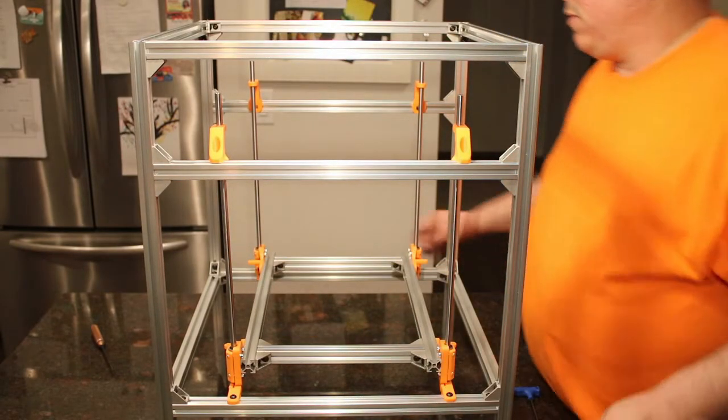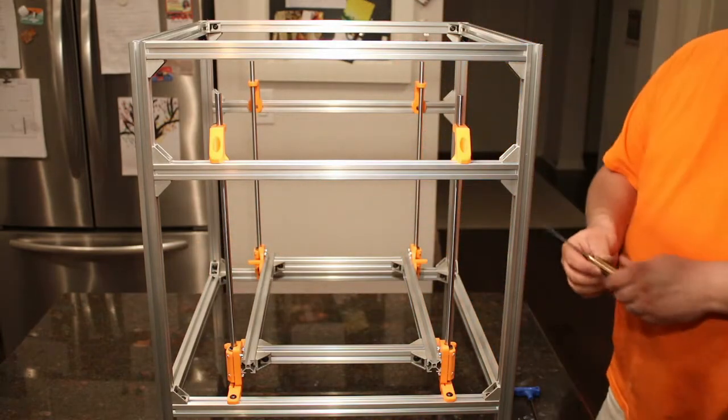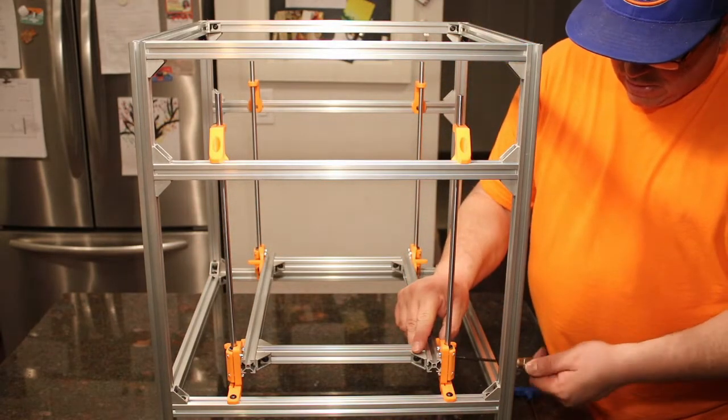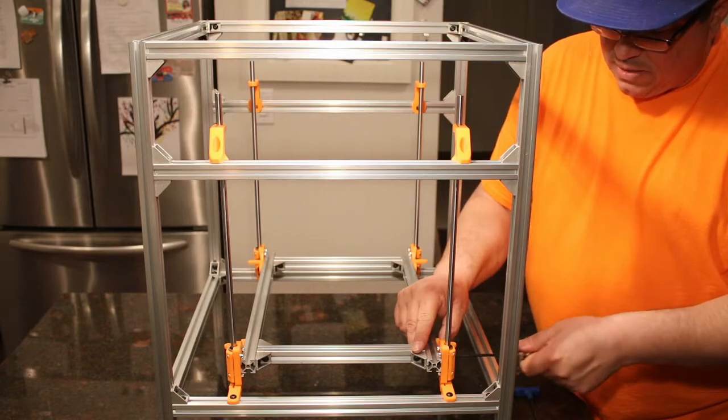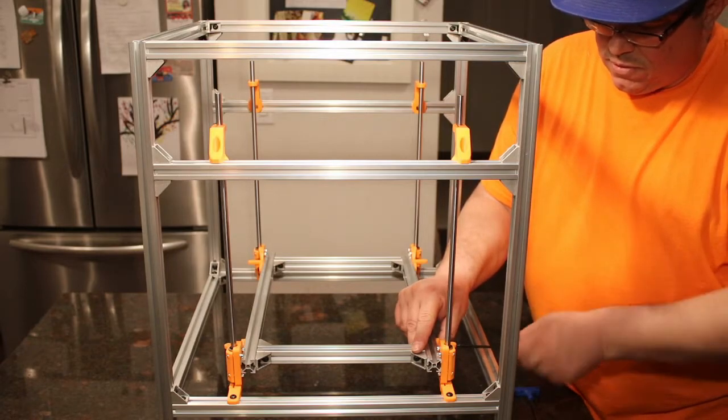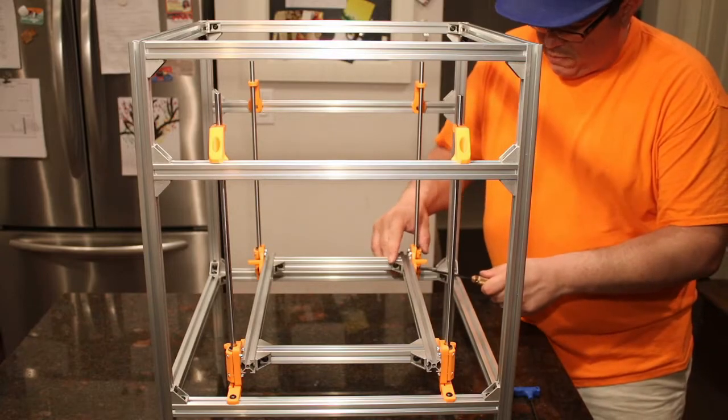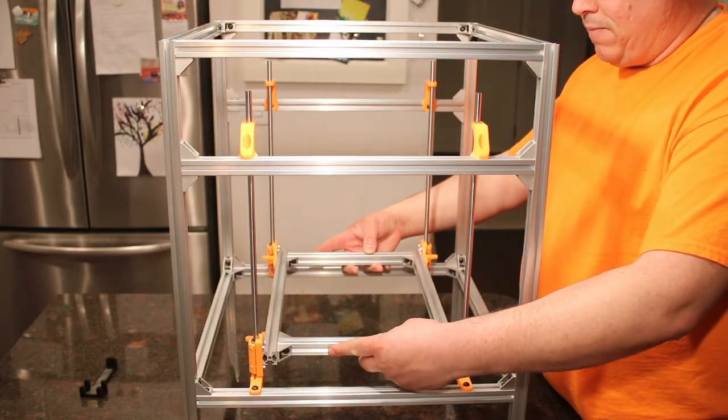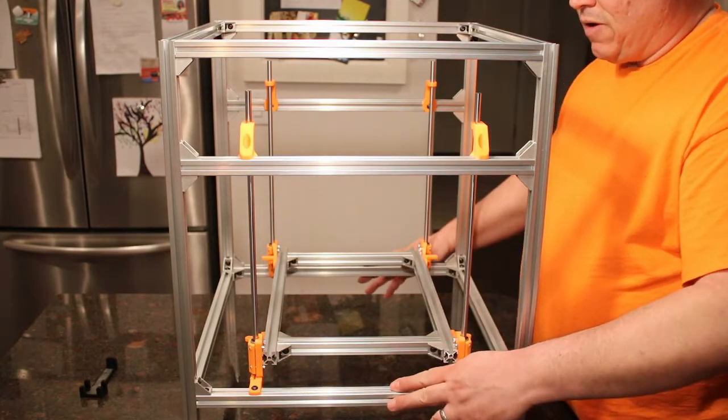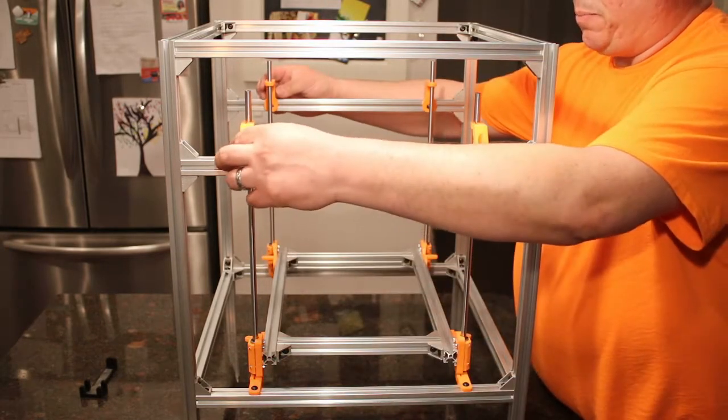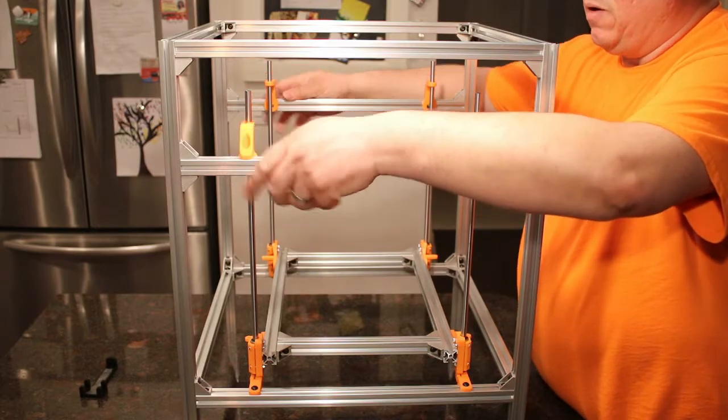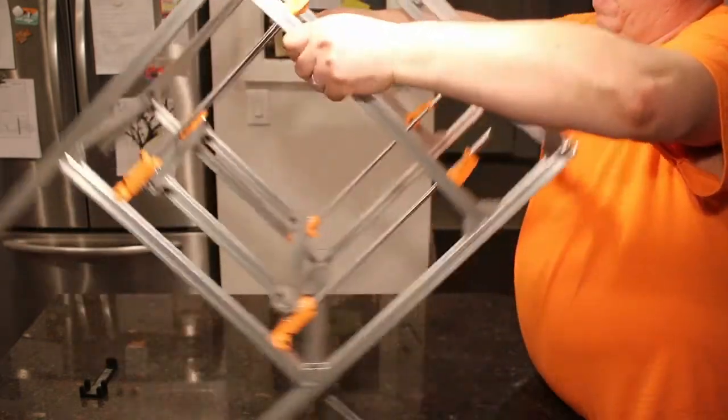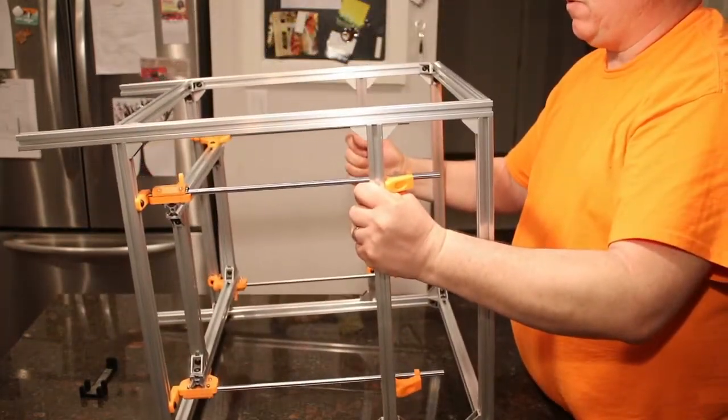Now we can go back with our M3 driver and snug these down. Again, not the final tightness. Just snug enough so they're not going to move. Now that we have the beds snugged down again, and these are nice and snug, we need to get these placed properly. And to do that, we're actually going to flip the frame onto its front face.